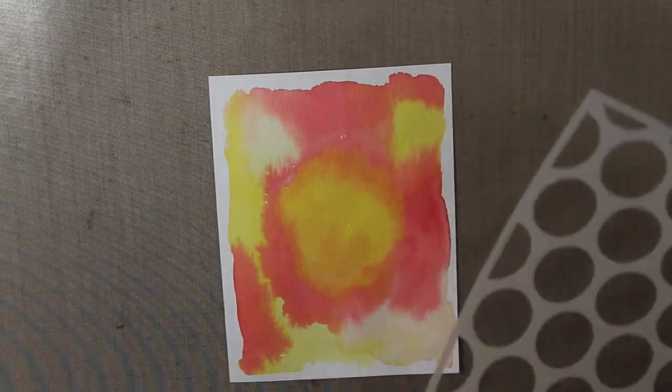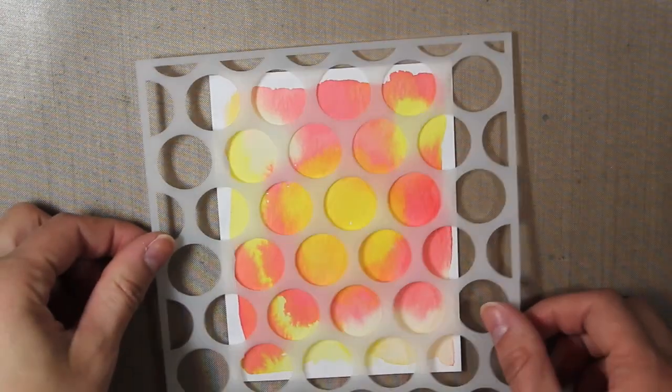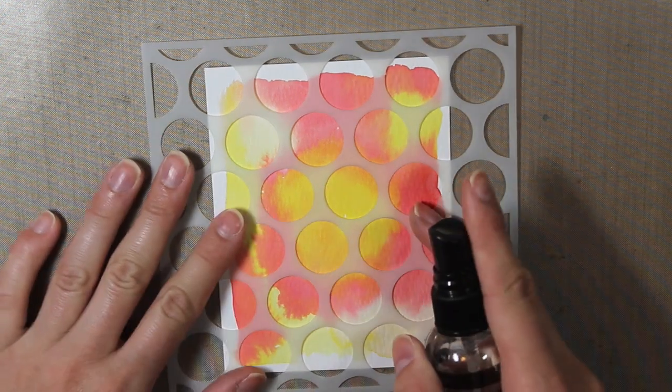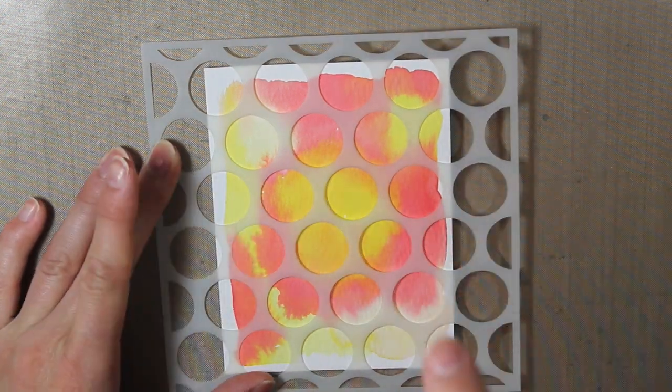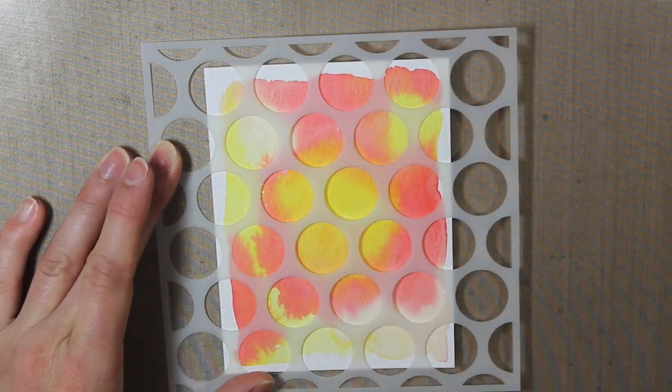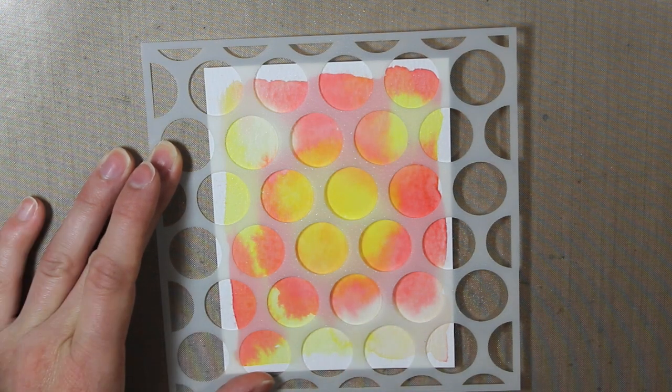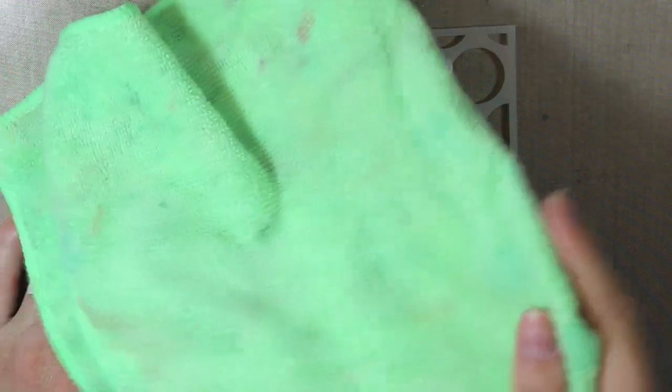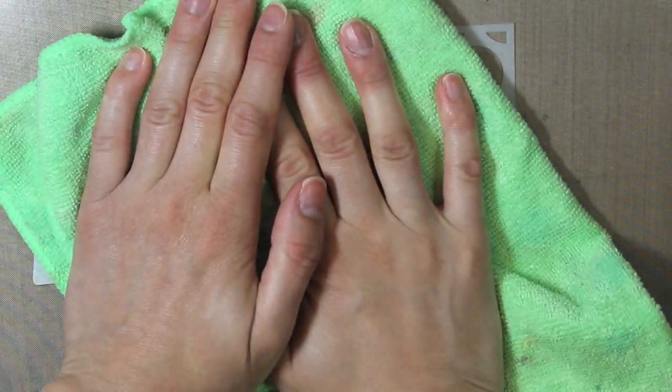And then I'm taking this dot stencil from Simon Says Stamp and placing that over the top. I did heat dry that background first. And I'm just going to spritz it with a little bit of water, because distress inks do react with water, so it will kind of pick up that color some more. And I'm just going to pick up all that water with my cloth.